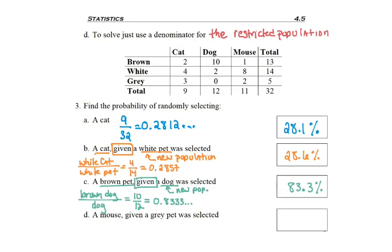So let's go ahead and have you solve question D. Pause and then check your answer. Okay, did you get 40%? You should have been looking for a gray mouse divided by just gray pets, which would give you 2 fifths for 40%.